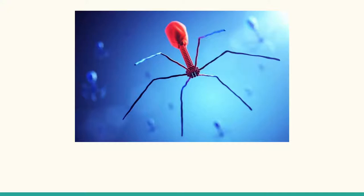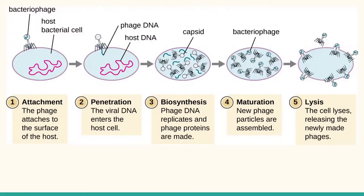Bacteriophages, such as this example, are viruses that attack bacteria. It's encased in a protein shell and stores DNA within the capsid head. Bacteriophages, like all viruses, reproduce through a process called the lytic cycle. This begins with the virus inserting genetic material into the cell. The cell is then forced to manufacture copies of the virus, which then lyse the cell and repeat the process.